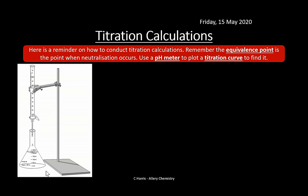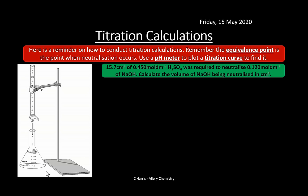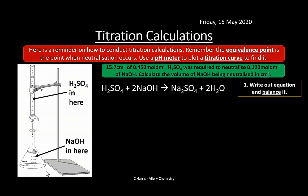Let's look at titration calculations. This is a reminder of how to conduct them - the equivalence point is where neutralization occurs. For example: 15.7 cm³ of 0.45 mol dm⁻³ sulfuric acid was required to neutralize sodium hydroxide at 0.120 mol dm⁻³. We need to calculate the volume of sodium hydroxide neutralized. First, write the equation: H₂SO₄ + 2NaOH → Na₂SO₄ + 2H₂O. In this case we put sulfuric acid in the burette and sodium hydroxide in the conical flask.